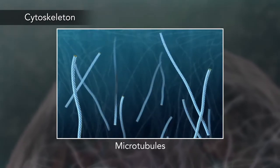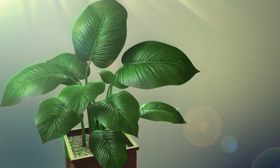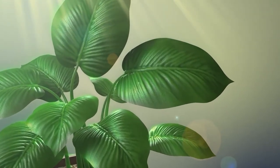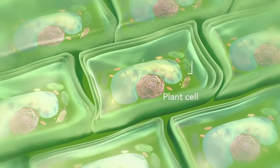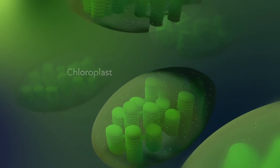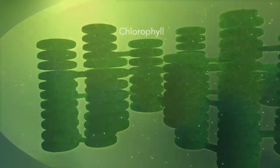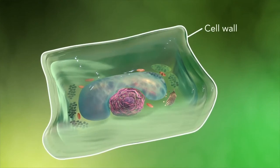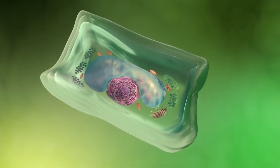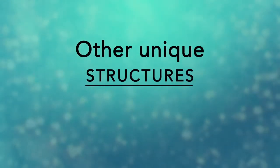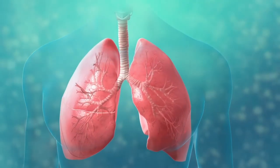Some organisms, such as plants, that are photo-autotrophic — meaning they capture sunlight for energy — have cells with an organelle called a chloroplast. The chloroplast is where photosynthesis happens. It's green because it has a green pigment called chlorophyll. Plant cells also have a cell wall outside of their cell membranes that shapes, supports, and protects the plant cell. Animal cells never have a cell wall.